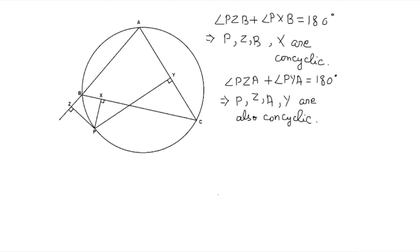These are the basic things that we can gather from this figure. Now we want to show that Z, X, and Y will be on the same line. So if you want to show that, we can chase some angles now with this given information.